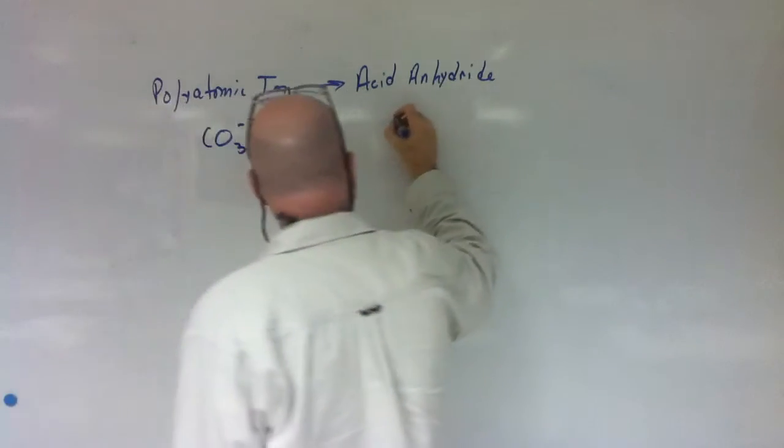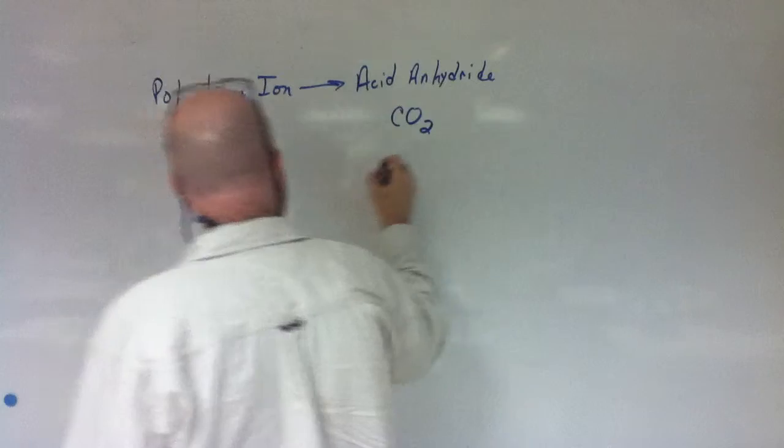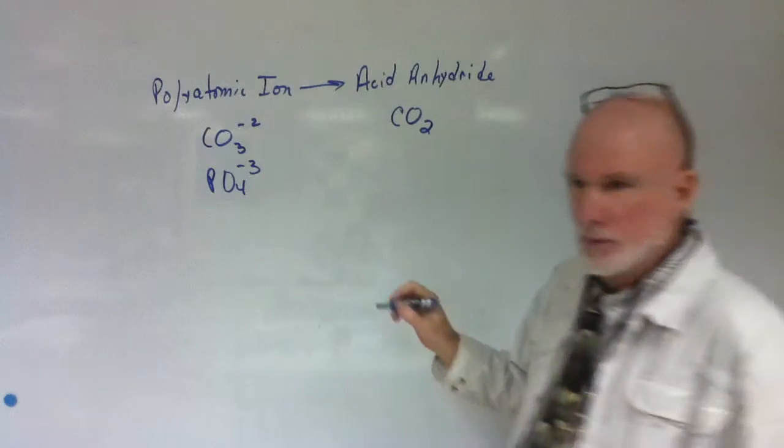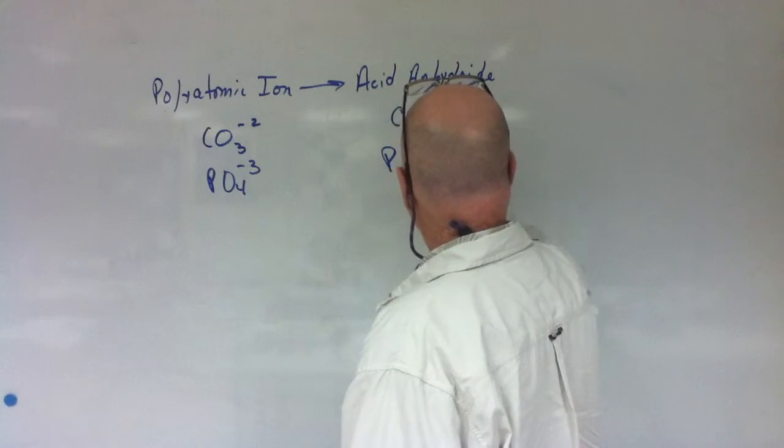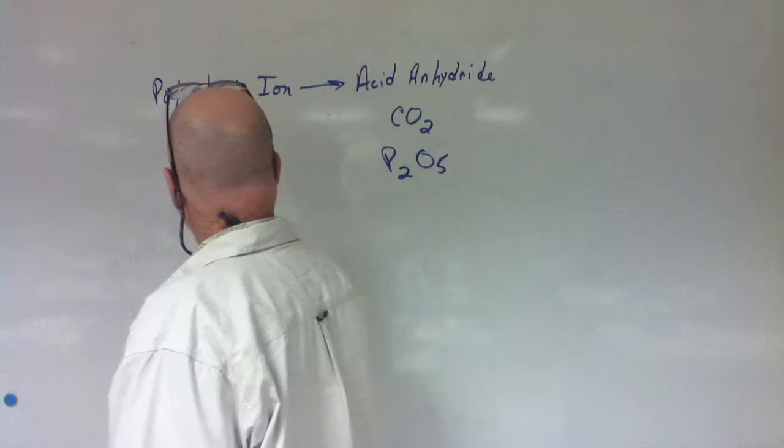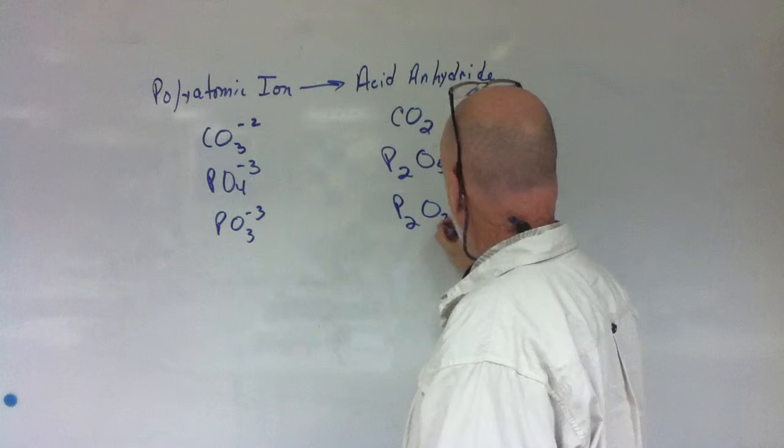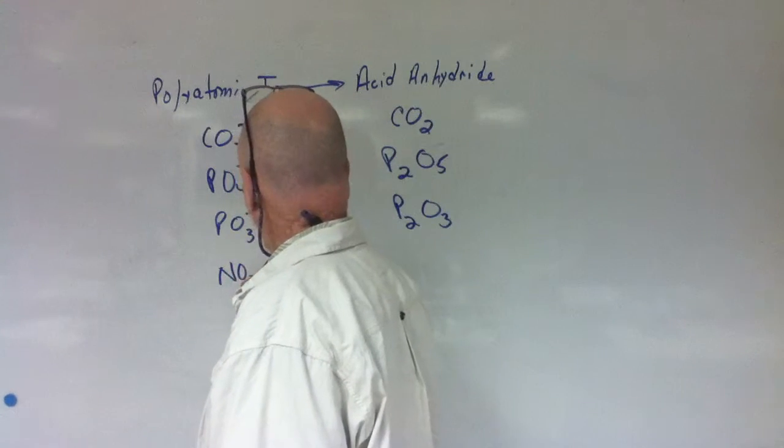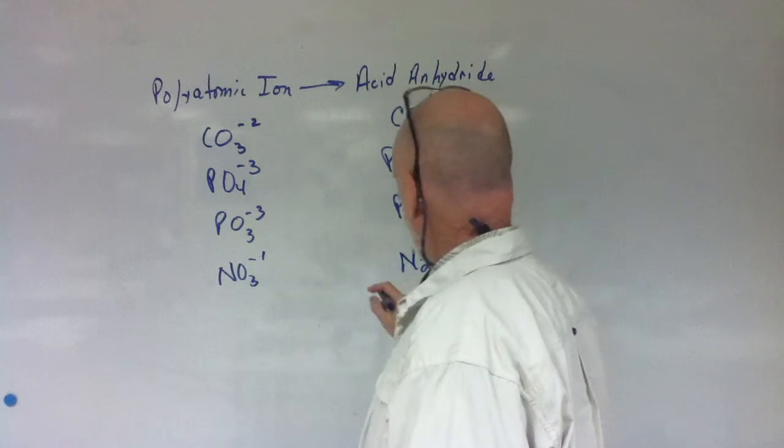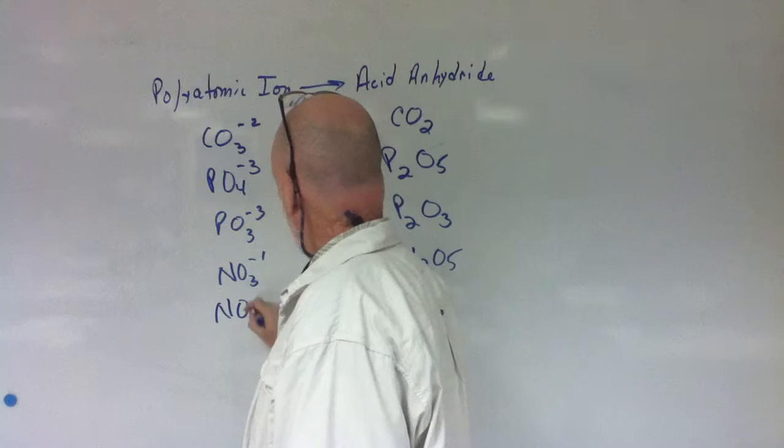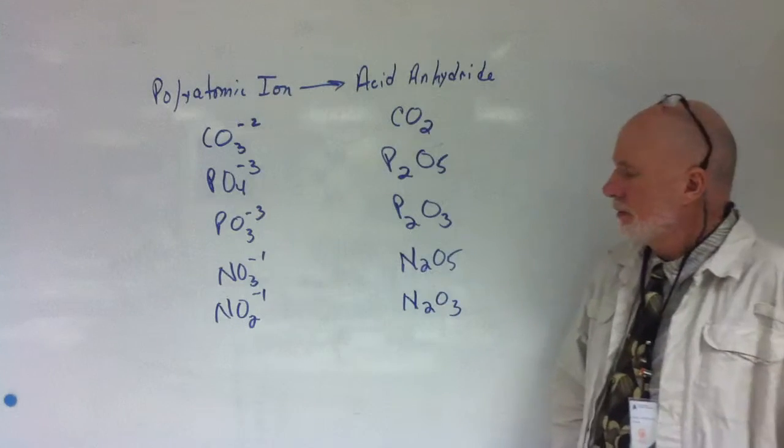CO3^2- is going to be CO2. PO4^3- is going to be what? P2O5. And then PO3^3- is going to be P2O3. And then NO3^- is going to be N2O5. And then NO2^- is going to be N2O3.